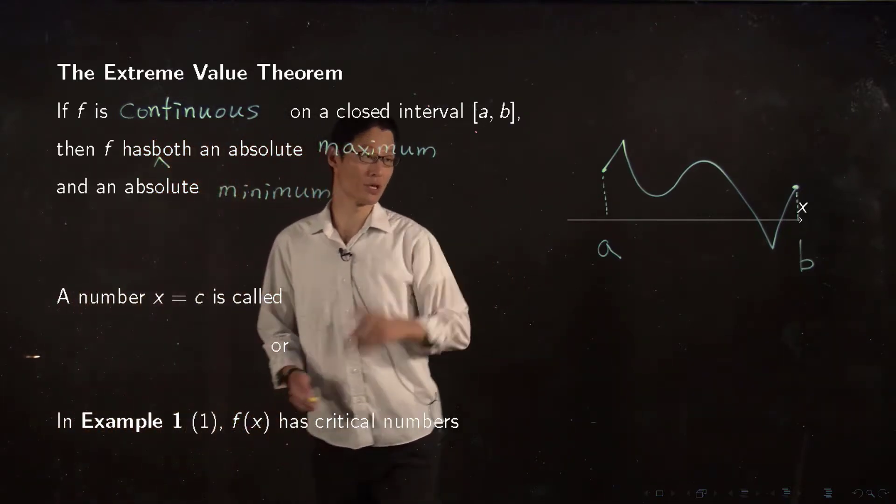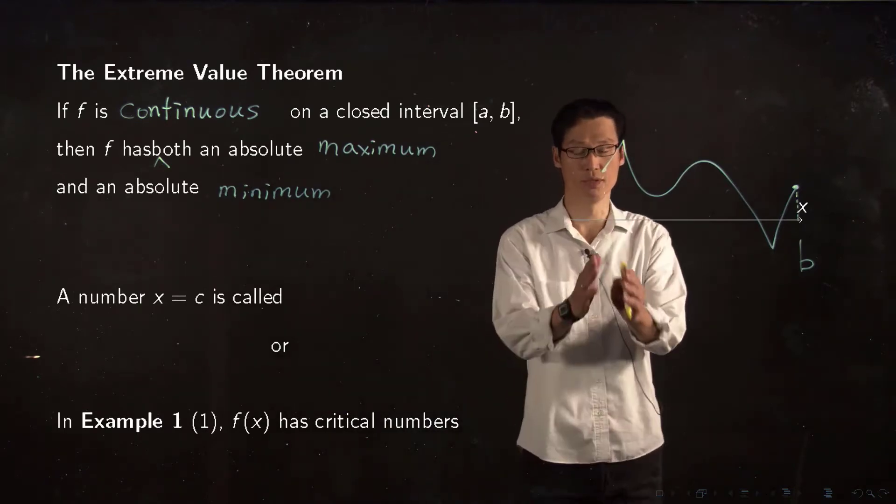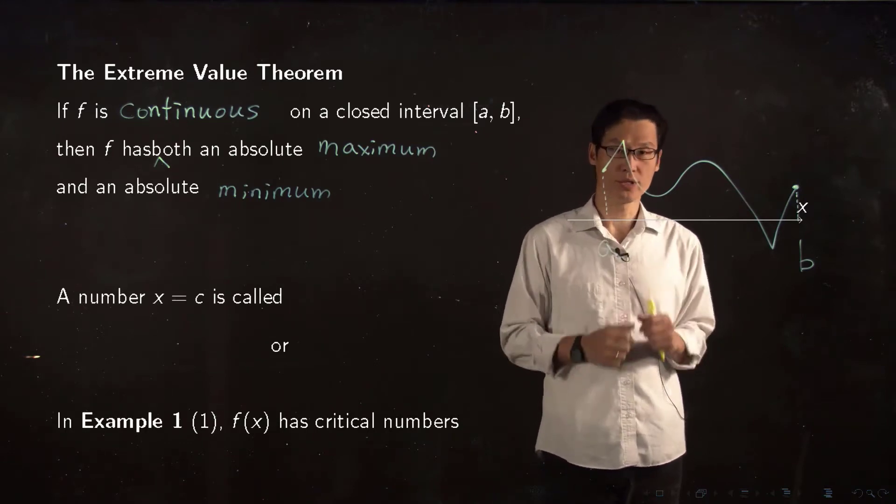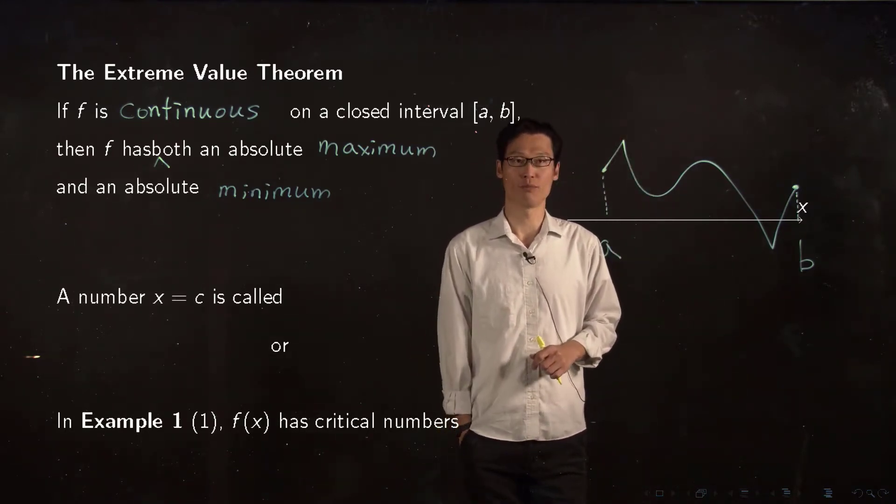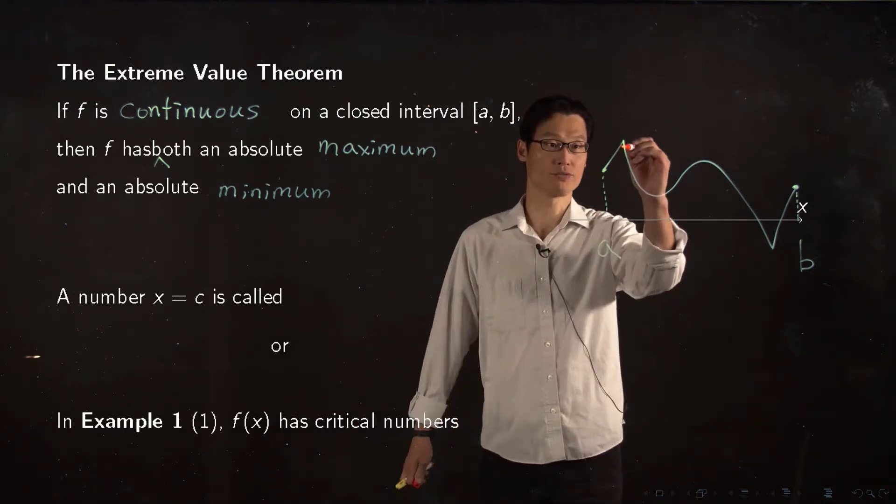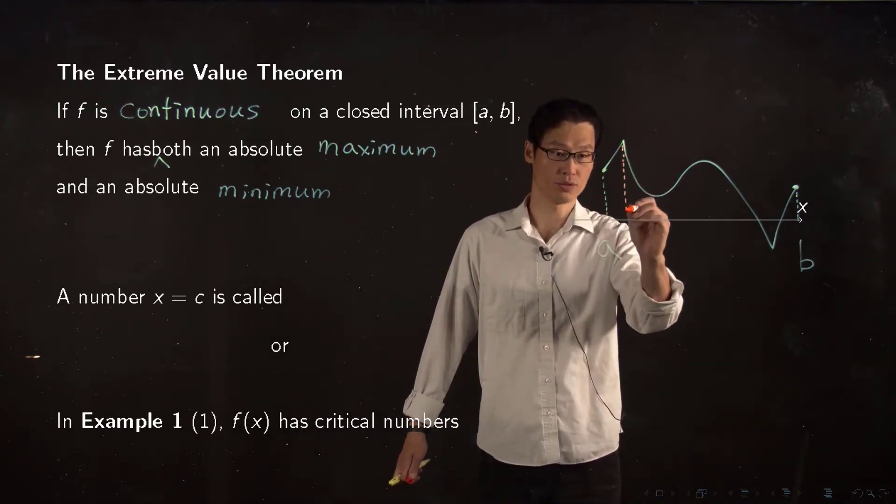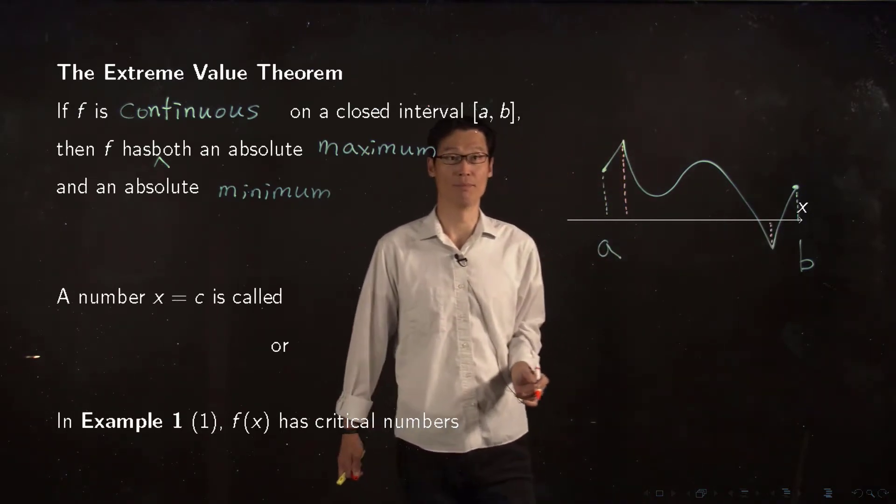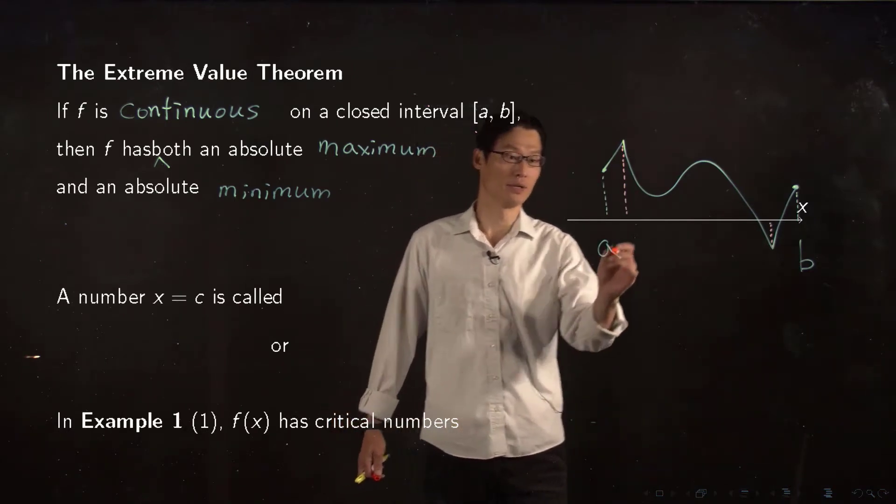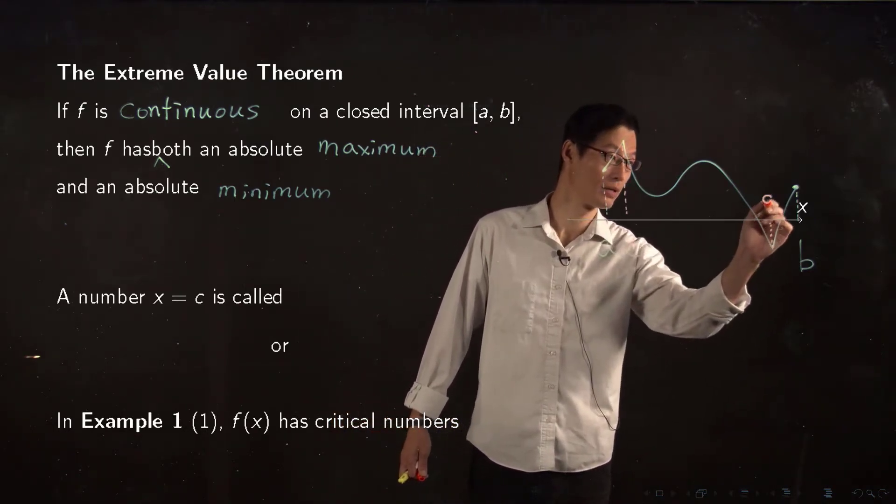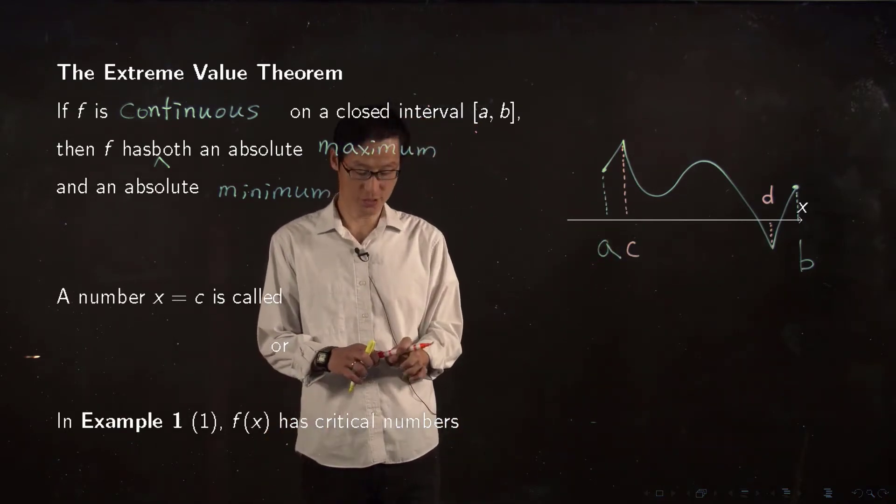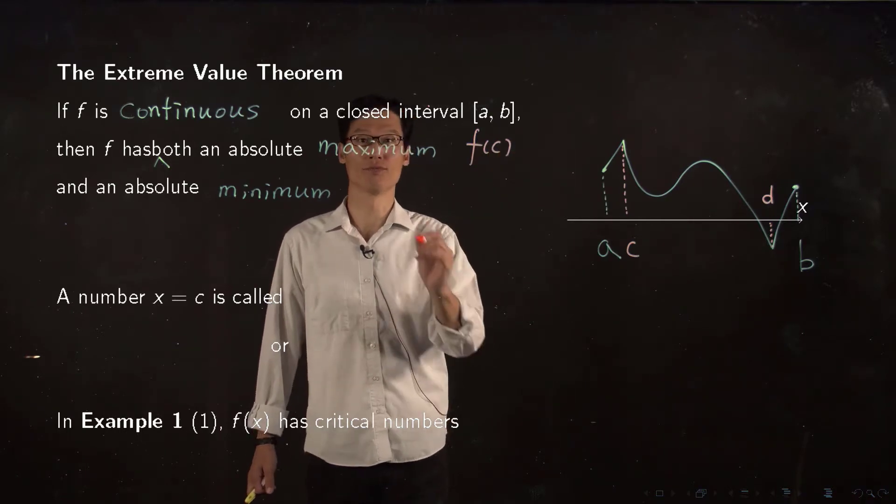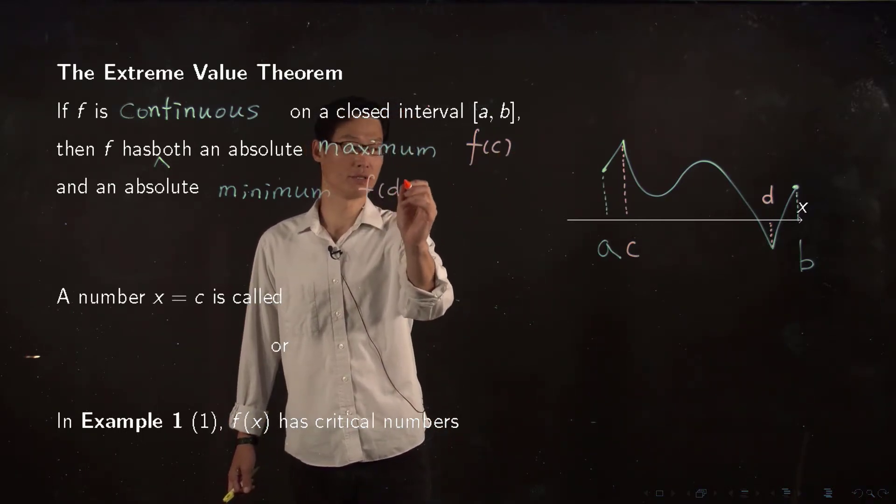So here is a quick example of a graph which is continuous on a closed interval from A to B. So looking at this graph, you can tell which one is your absolute maximum and minimum. This value is absolute maximum and this value is absolute minimum. Let's say this is C and D. So if your graph looks like this, absolute maximum is F of C and absolute minimum is F of D.